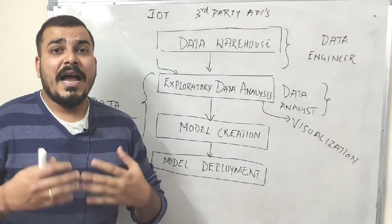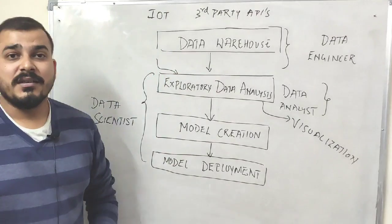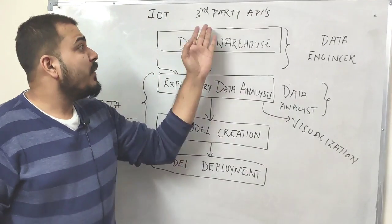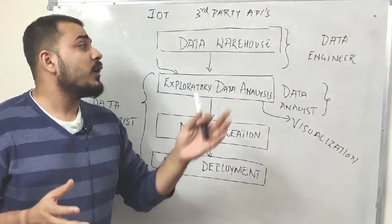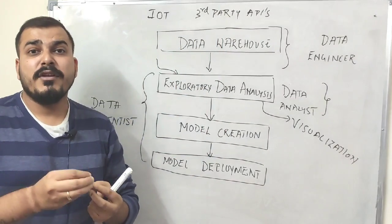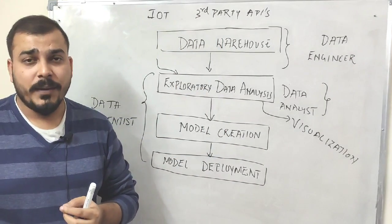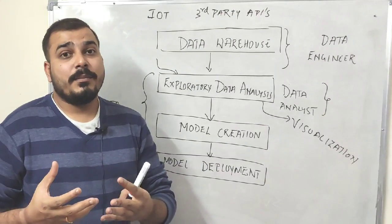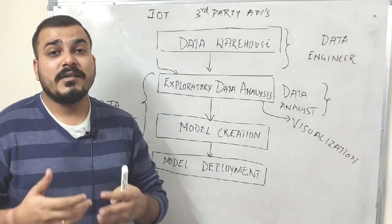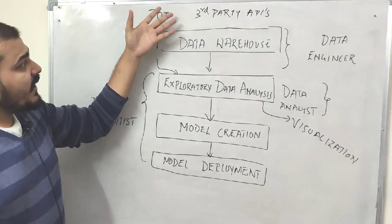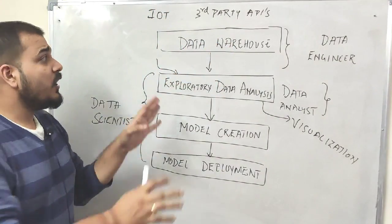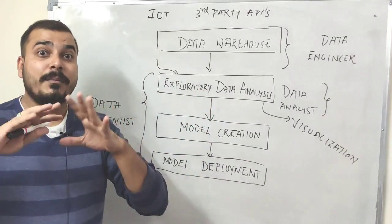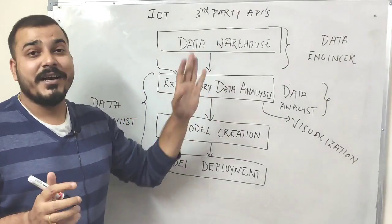In this particular data warehouse, I'll be collecting the data through various means. It may be IoT data, it may be through third party APIs, social networking sites, and many more. There are a lot of APIs that provide us free data and some are also paid. All this raw data, huge and abundant amounts, will be stored in the data warehouse.